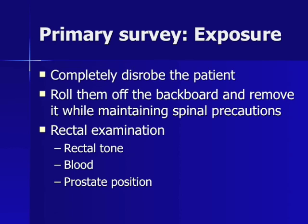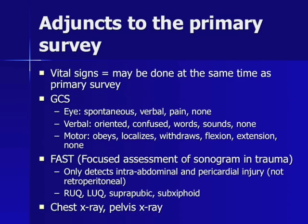There are several adjuncts to the primary survey. Vital signs, although they should not delay the primary survey, may be done at the same time if there are enough resources. The GCS may also be performed, assessed by looking at three variables: eye response, verbal response, and motor response. The highest score is 15 and the lowest is 3.